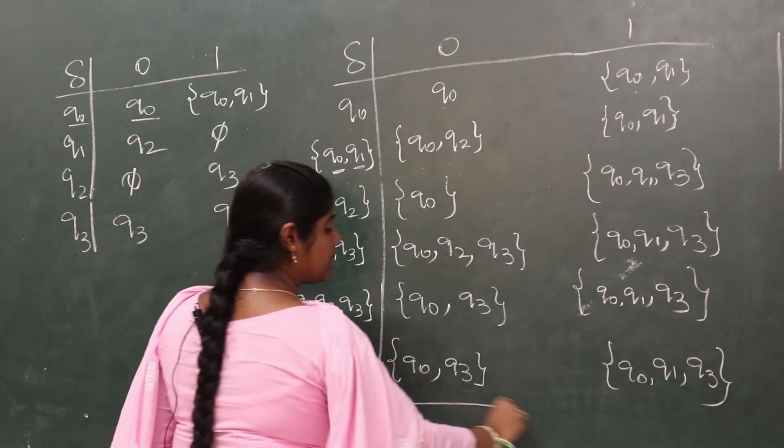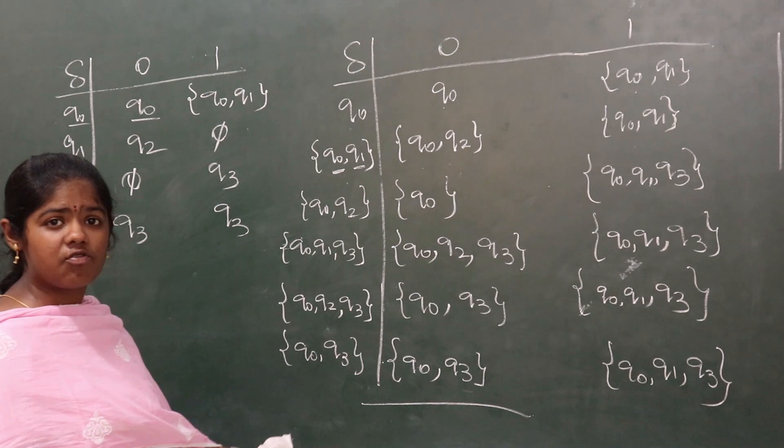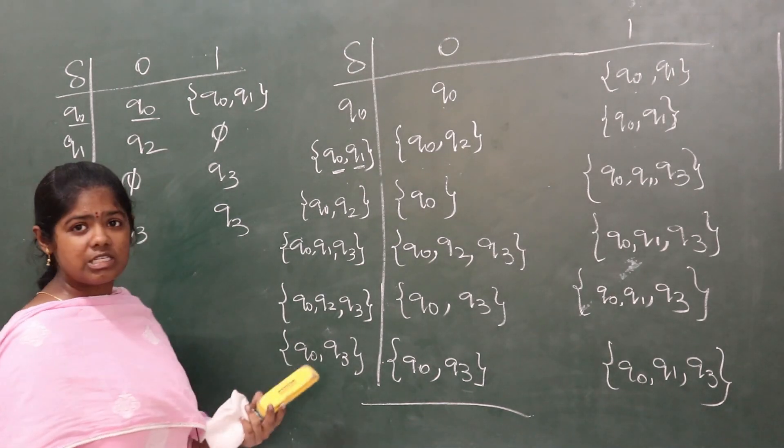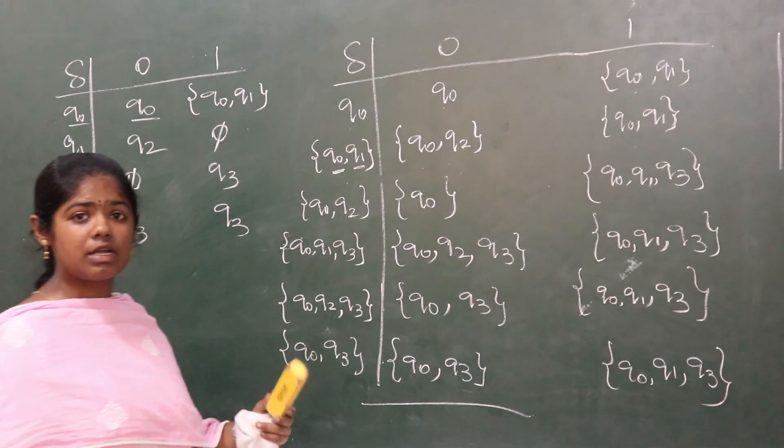So here is the transition state for DFA. This is the transition state. Now, what is the starting state and what is the final state? How to recognize them?